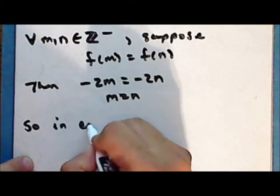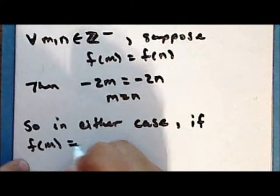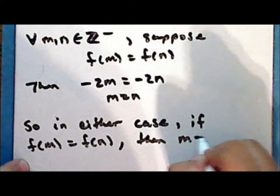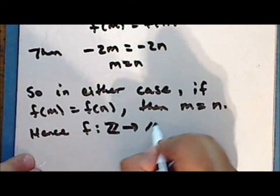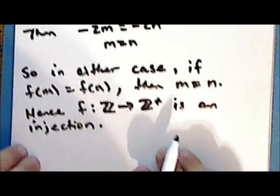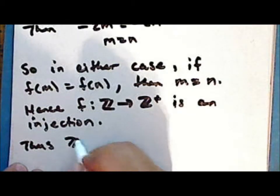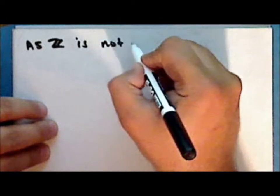So in either case, if f(m) = f(n), then m = n. Hence the function f from the set of integers into the set of positive integers is an injection, and thus the set of integers is countable. As the set of integers is not finite, it is countably infinite.